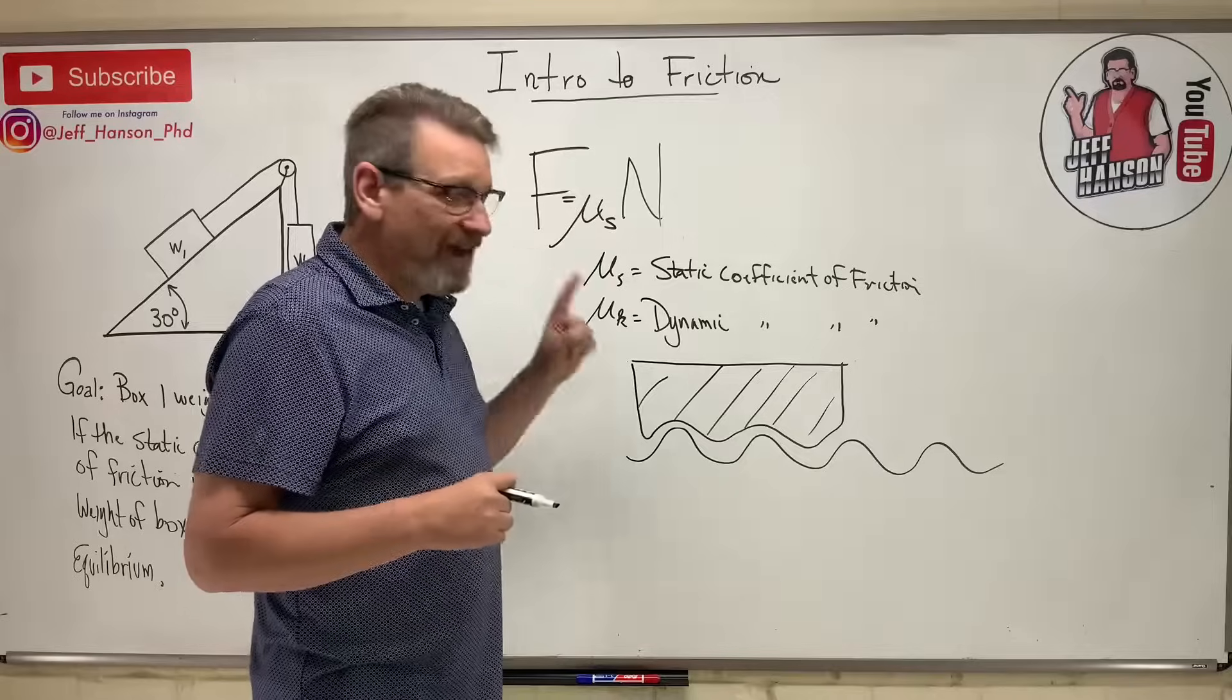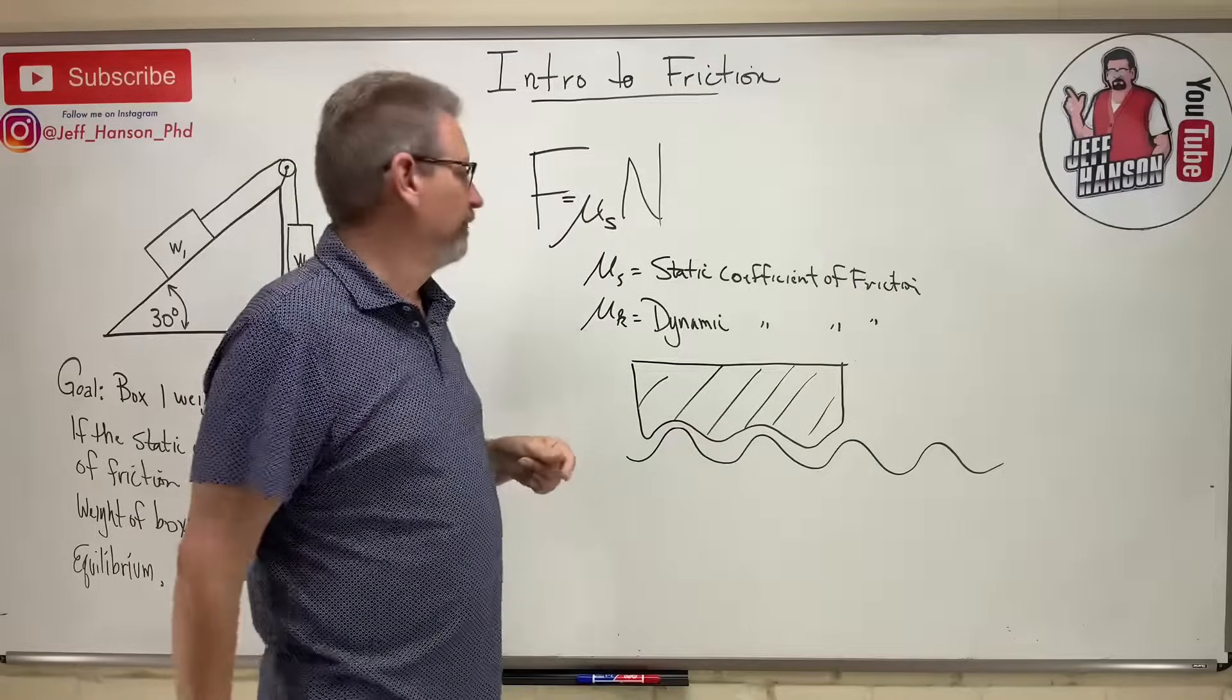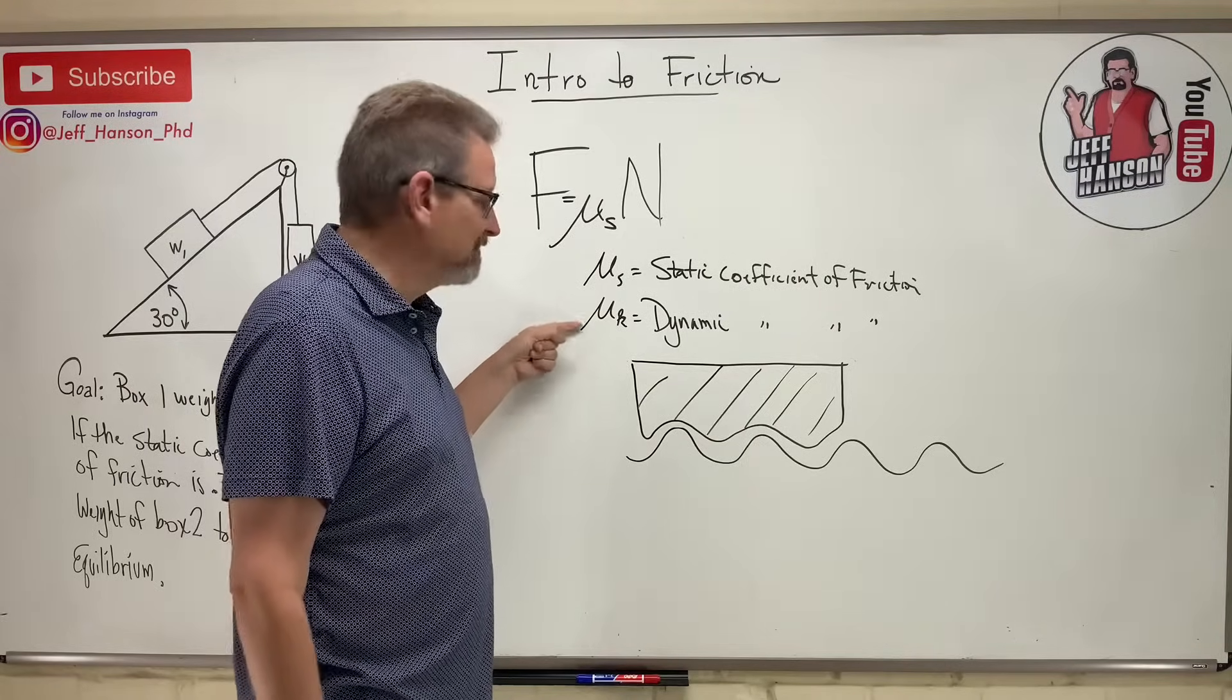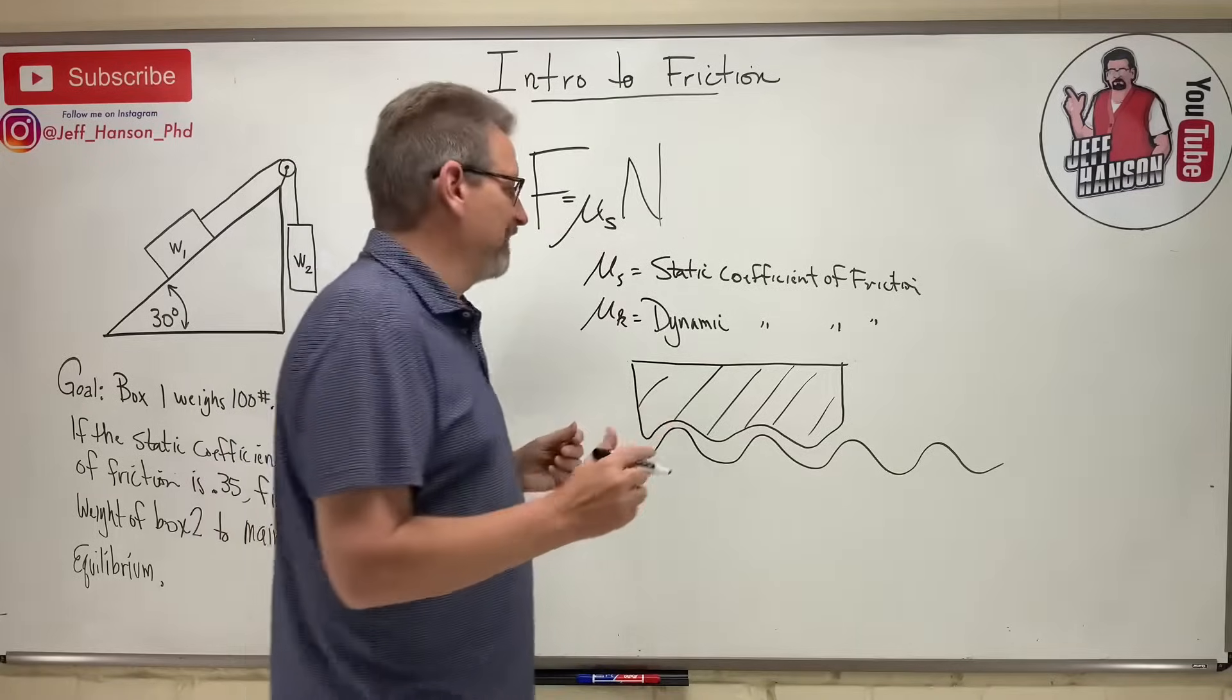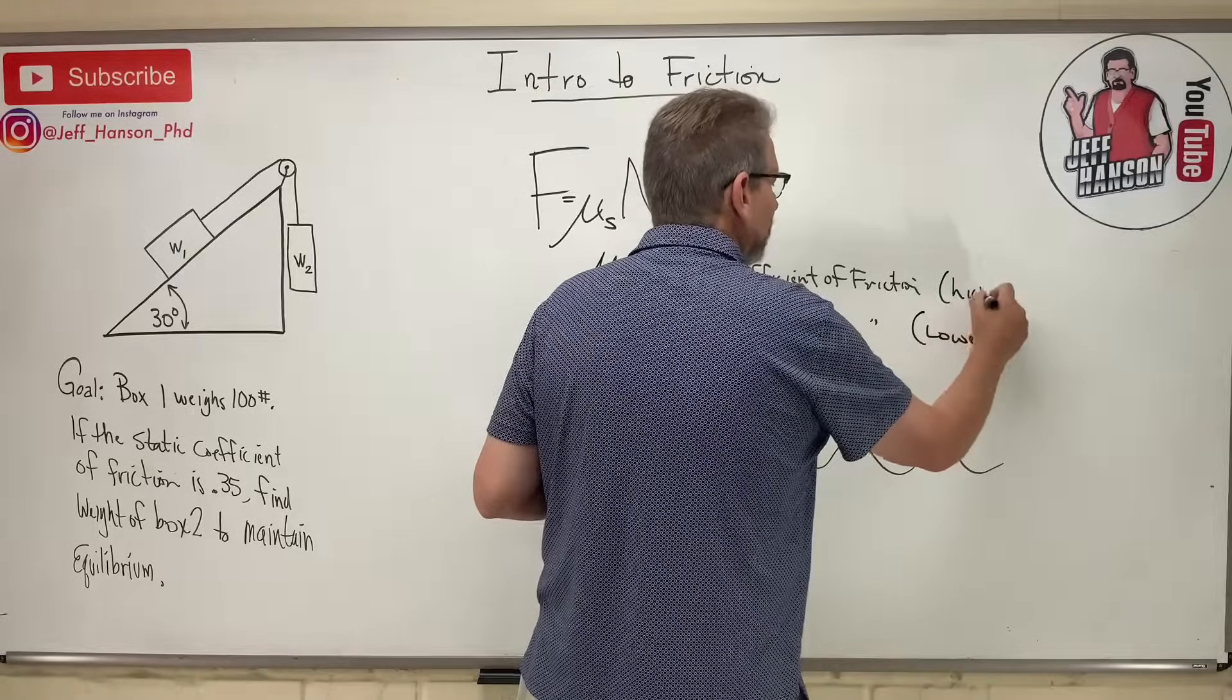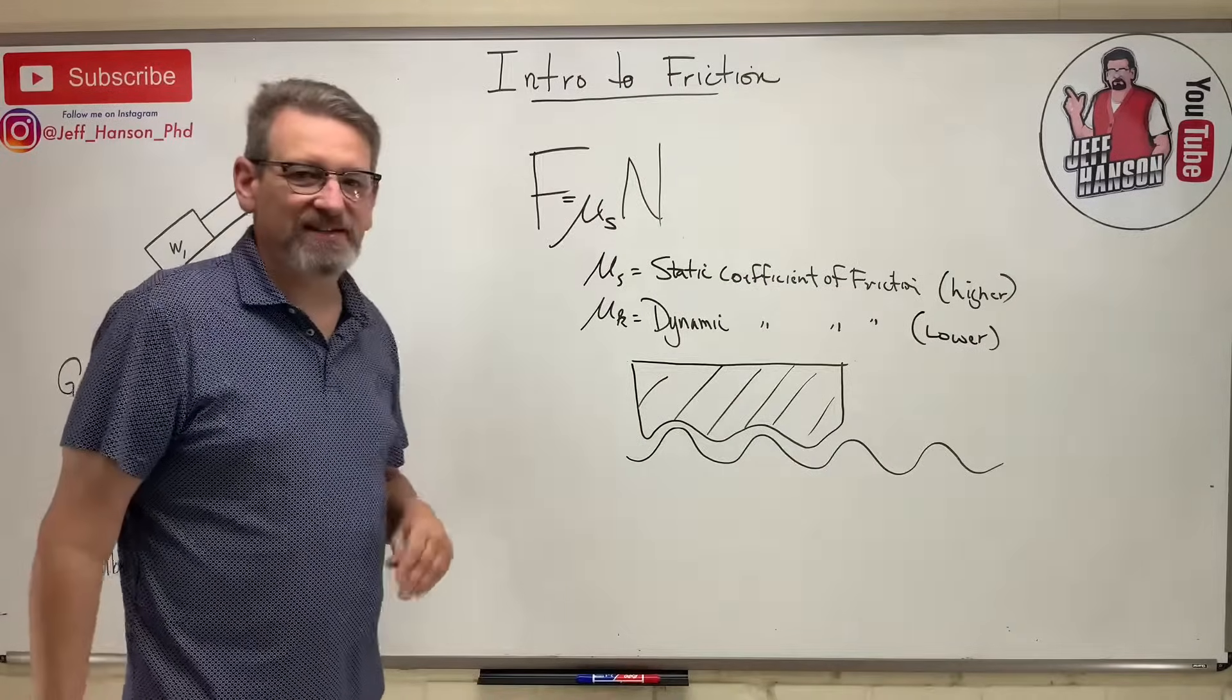So knowing that, which one of these is always going to be lower. Static coefficient of friction is always going to be higher. Mu sub k is always going to be lower. It's going to be less because think about that. Once you get it moving, it's kind of easier to push, isn't it? So this is lower. This is higher. Always. So if you kind of remember that little analogy, that will be pretty easy to stick in your head.